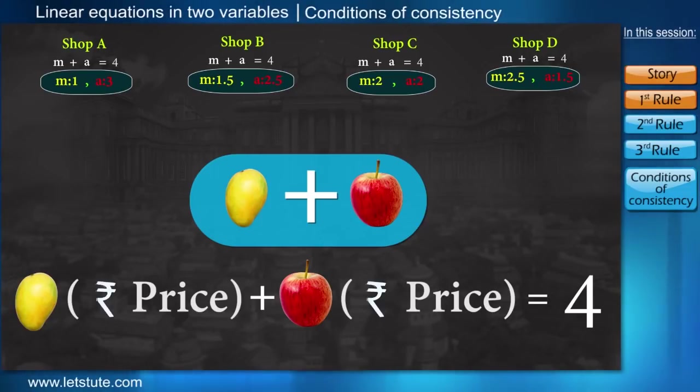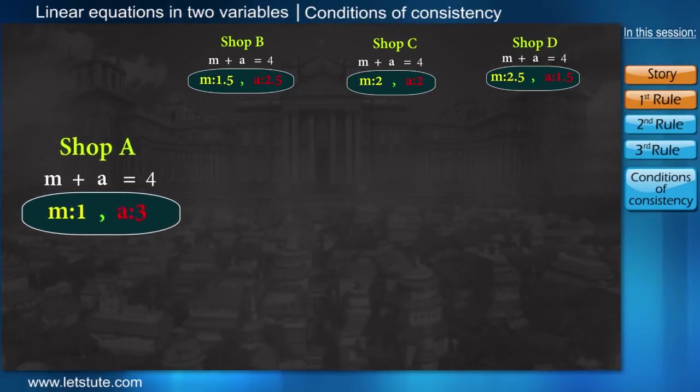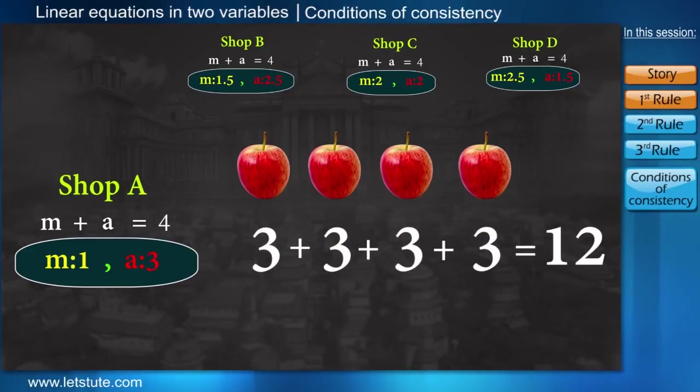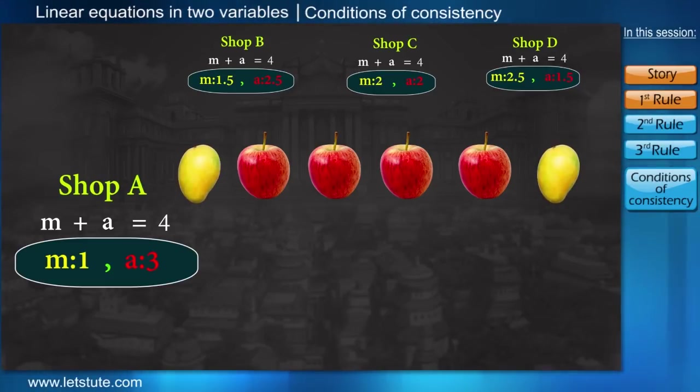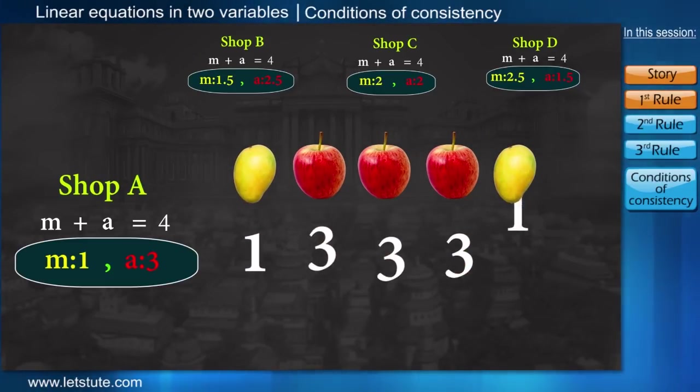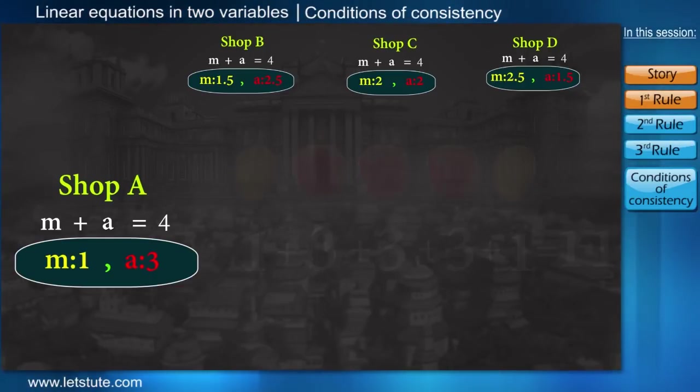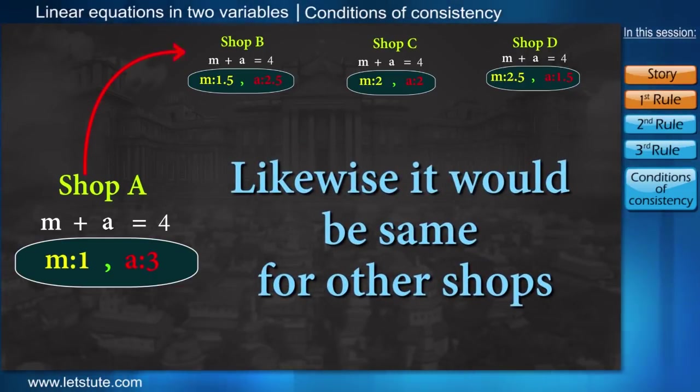Taking the example of shop A, how much money will I have to pay if I buy four apples? Yes, you are right, it's 12 rupees. And what if I have to buy two mangoes and three apples? Then I will have to pay 11 rupees, right? Likewise, it would be same for the other shops.